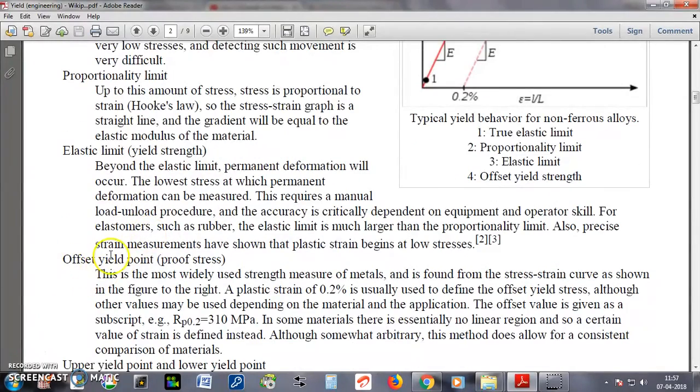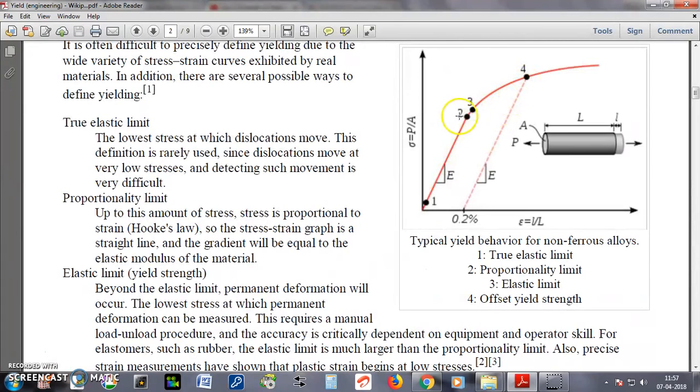After that, this is an offset yield point or proof stress. What is that? If we cannot measure properly this point number 3, we can have a stress value for a particular given value of strain, that is 0.1% or 0.2% of strain over here.